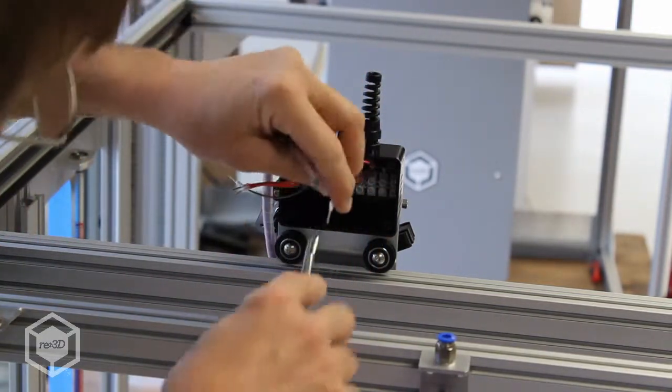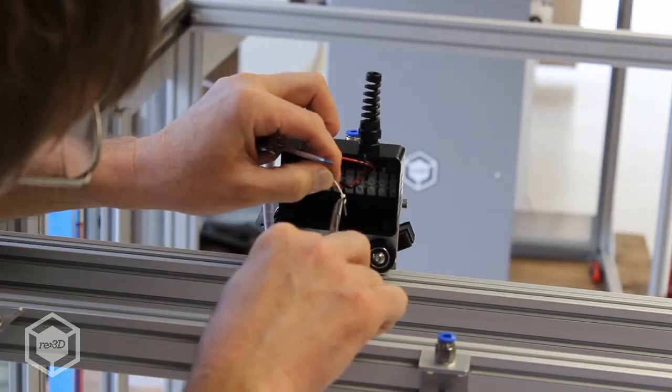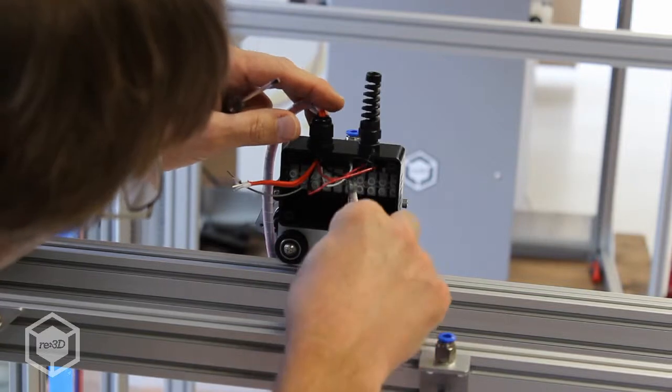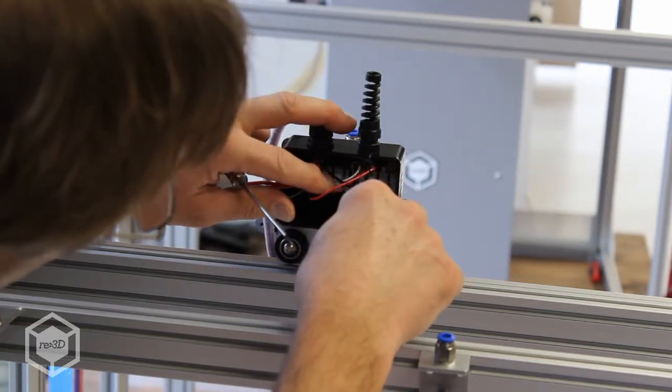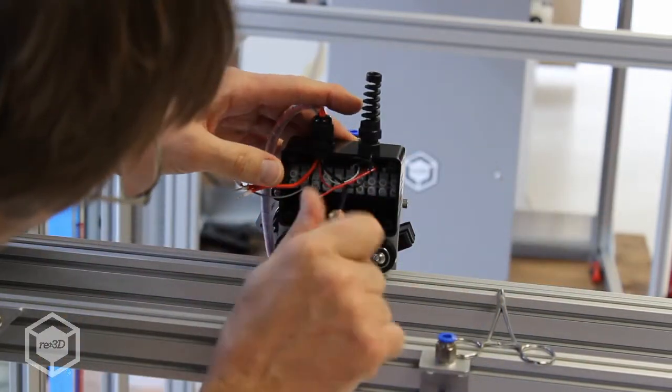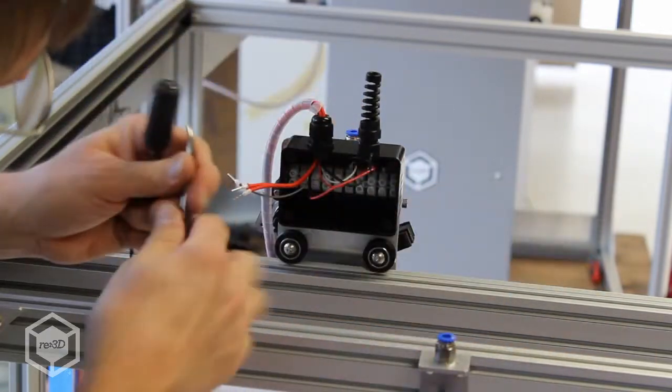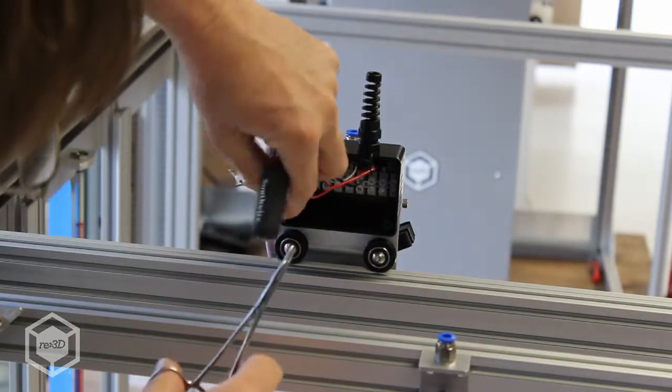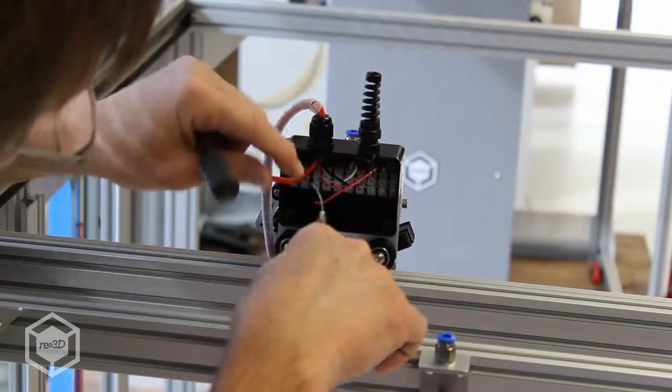So then the next one will be white. This goes to the thermistor on the hot end. Then it's gray, right next to the white. And in between the red and the black, and the white and the gray.